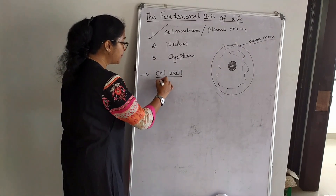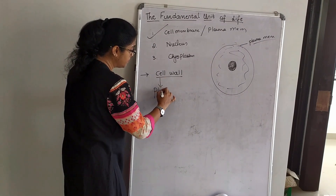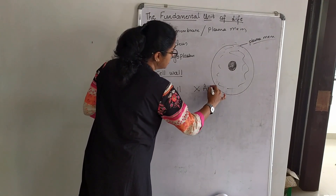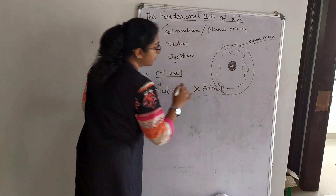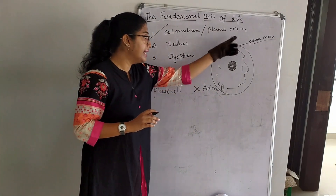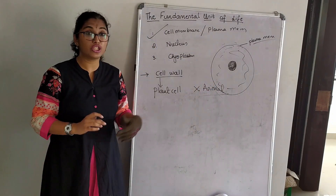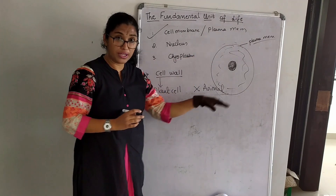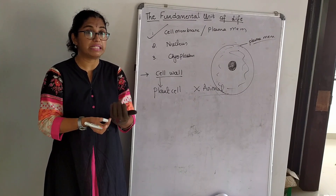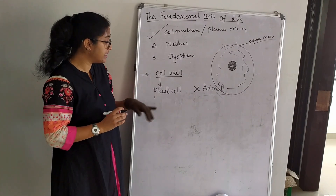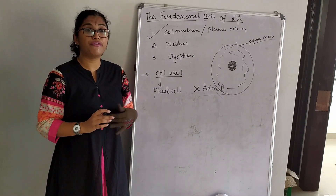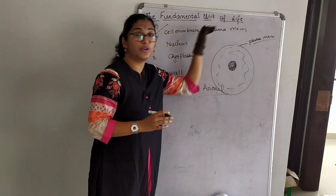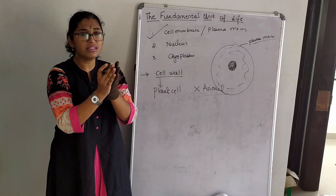Cell wall is only present in plant cells. It is absent in animal cells — there is no cell wall in the animal cell. The cell wall is porous, to allow transfer of materials in and out of the cell. It is made up of dead, non-living cells.